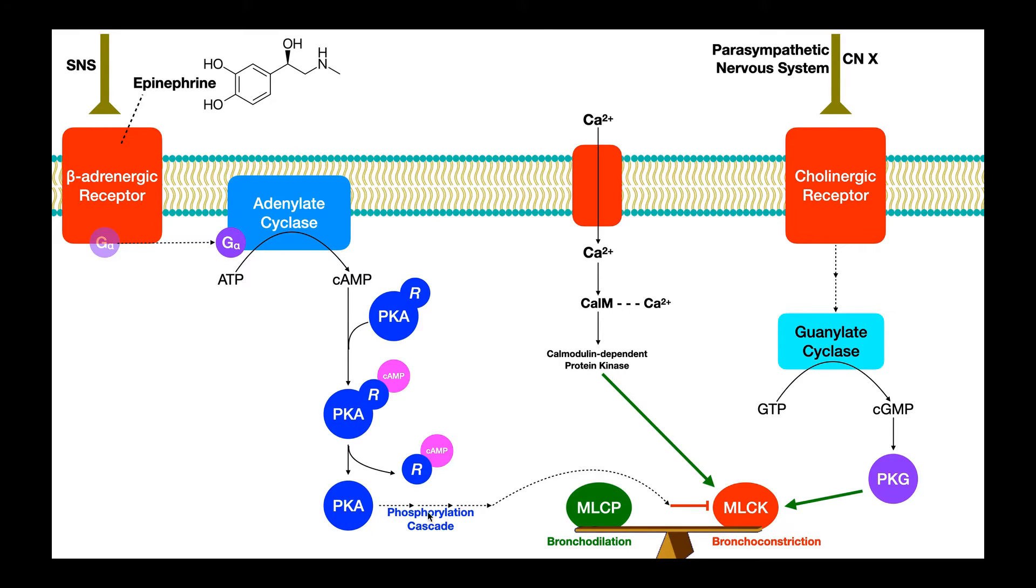Now I'm not showing all the steps here, and there's probably many of them, we won't talk about them, but ultimately that protein kinase A is going to lead to the inhibition, notice this inhibition arrow right here, of myosin light chain kinase.